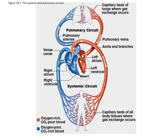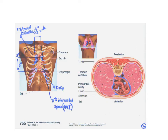So that's two different circuits: the pulmonary circuit and the systemic circuit. The heart is actually found in the mediastinum, which is a cavity within the thoracic cavity.